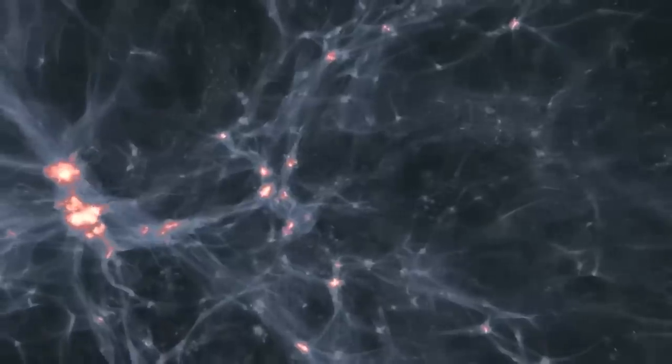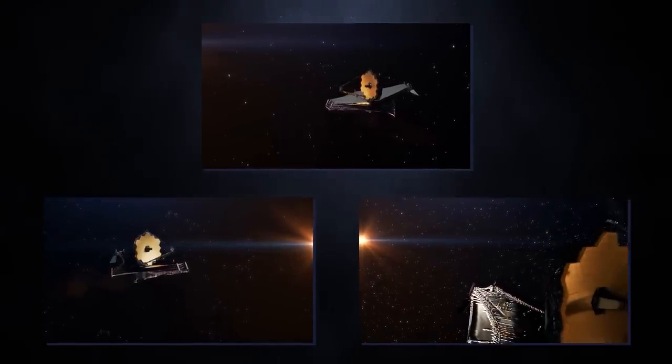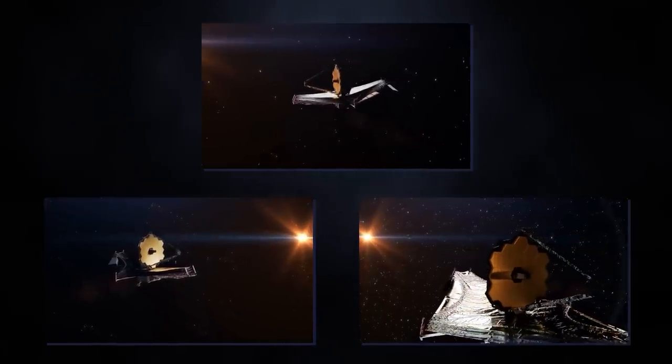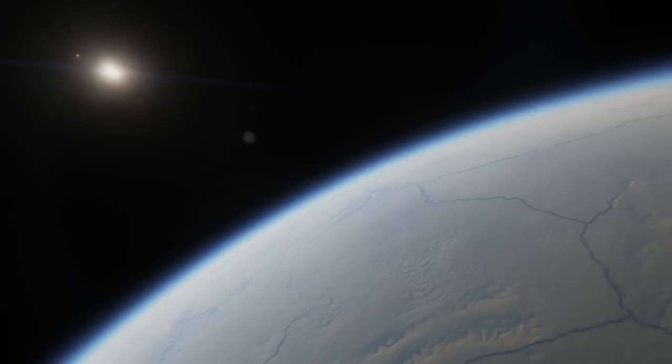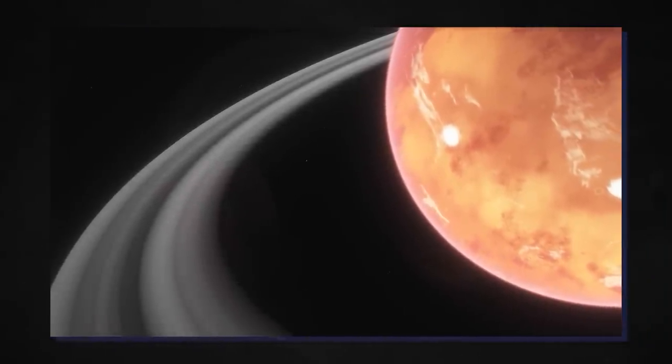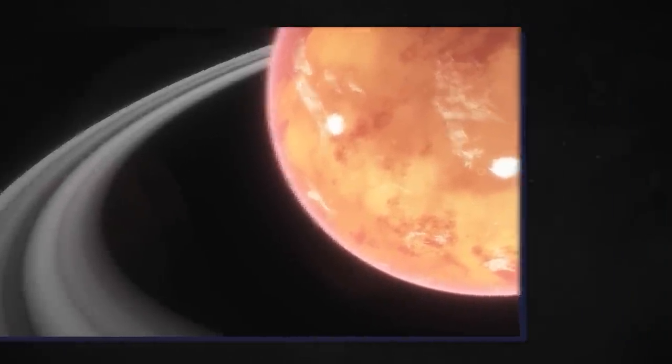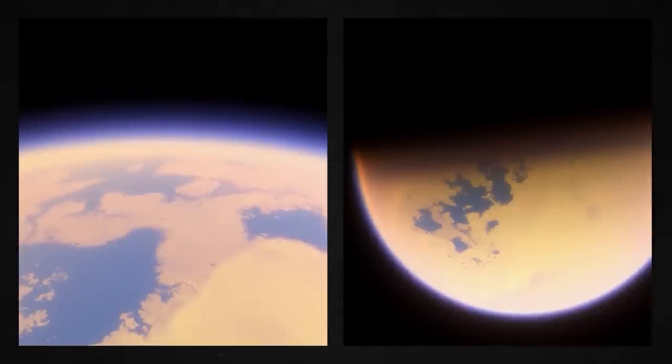There is still much more to come from James Webb, including studying the formation of planets and the nature of dark matter. It will help astronomers learn more about dark matter by studying how galaxies change over time and how dark matter behaves around them. The telescope has already conducted transit spectroscopy on exoplanets, allowing astronomers to study their atmosphere's composition by analyzing the light that passes through them. There are more than 5,000 exoplanets that have been discovered to date, ranging in size from massive gas giants to small rocky worlds.